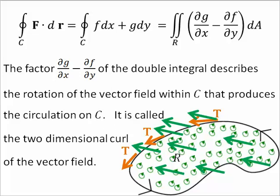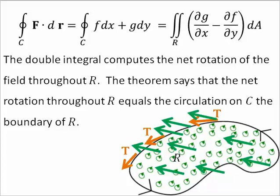The double integral computes the net rotation of the field throughout the region. The theorem says that the net rotation throughout R equals the circulation on the curve, which is the boundary of R.